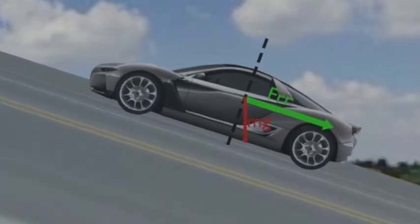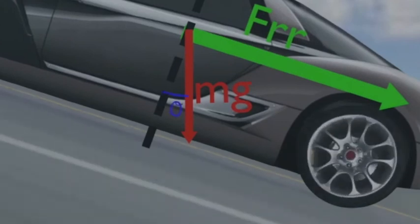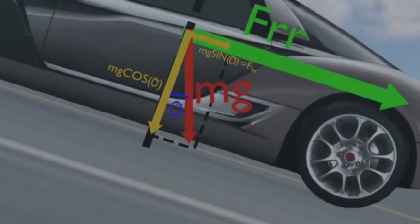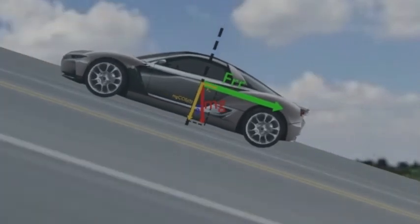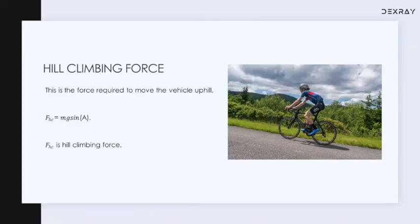Now let's assume that our vehicle is moving up a hill. The angle of inclination is assumed as theta. If you look into the diagram, we can see that a component of weight opposes the upward motion of the vehicle — specifically, mg sin θ is the component that opposes the motion, where theta is the angle of inclination. This force is known as hill climbing force. While moving uphill, the sine component of weight opposes the motion, and while moving downhill it aids the motion. The equation is FHC = mg sin A, where A is the angle of inclination.